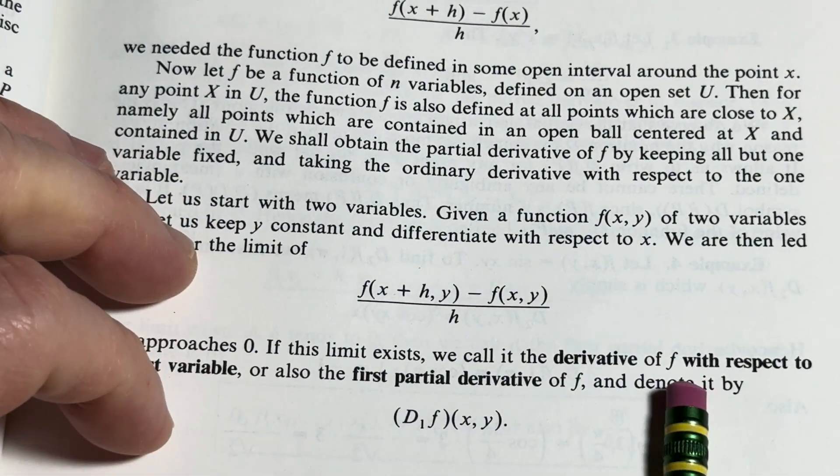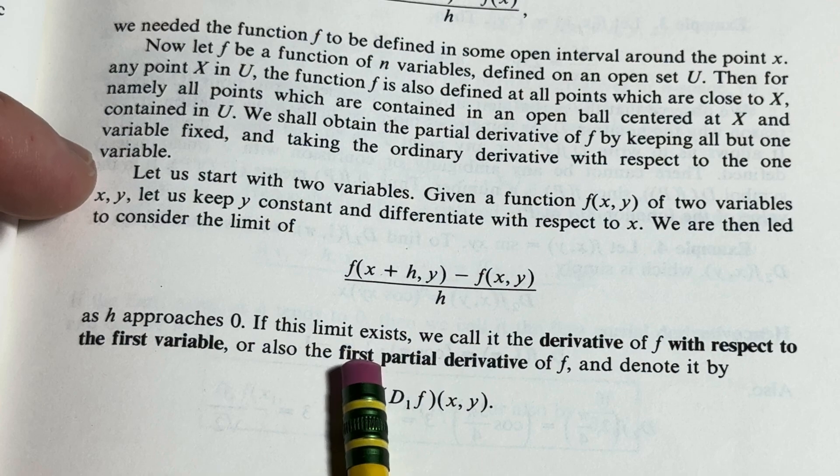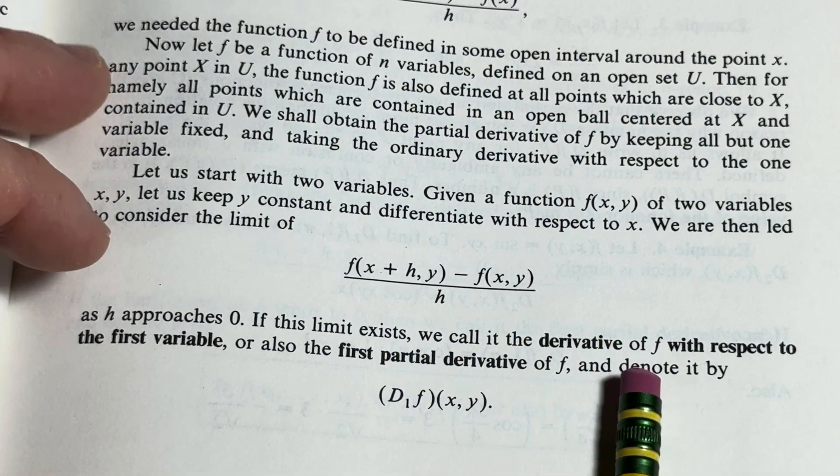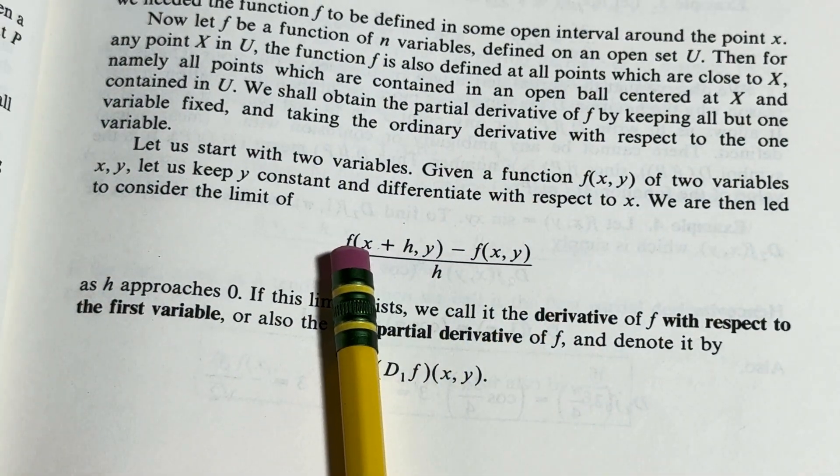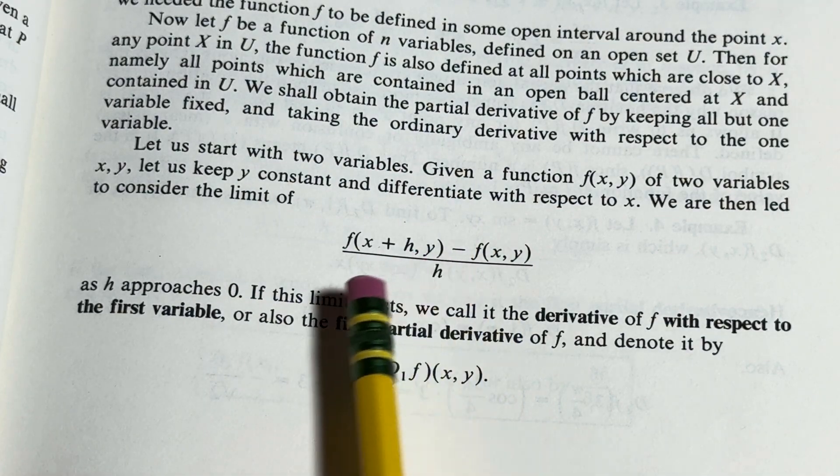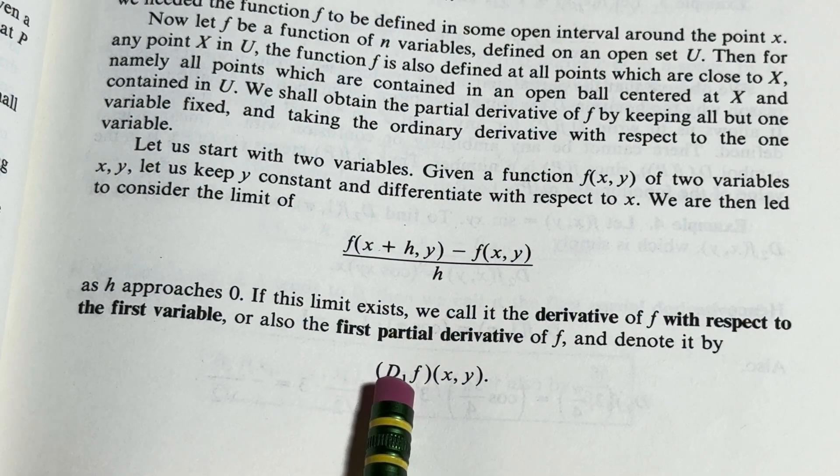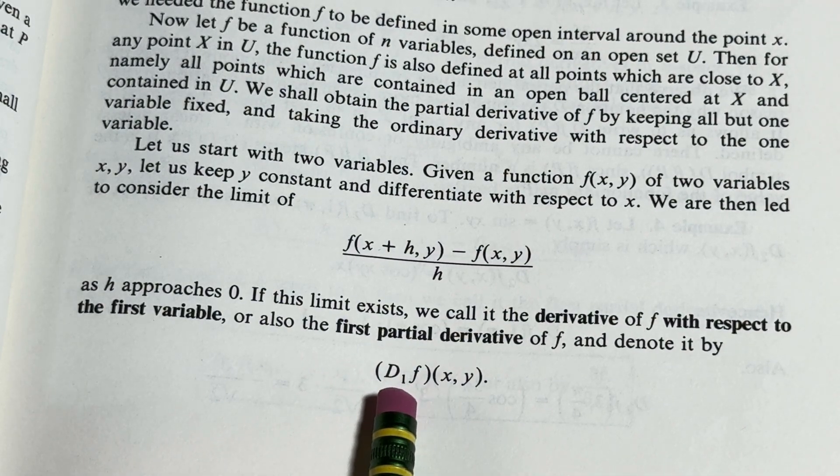we call it the derivative of f with respect to the first variable or also the first partial derivative of f and denote it by. So in this case, it's with respect to x, but it's saying first variable to indicate that this will generalize to n variables. And here you see it has a subscript of 1 because it's the first variable.